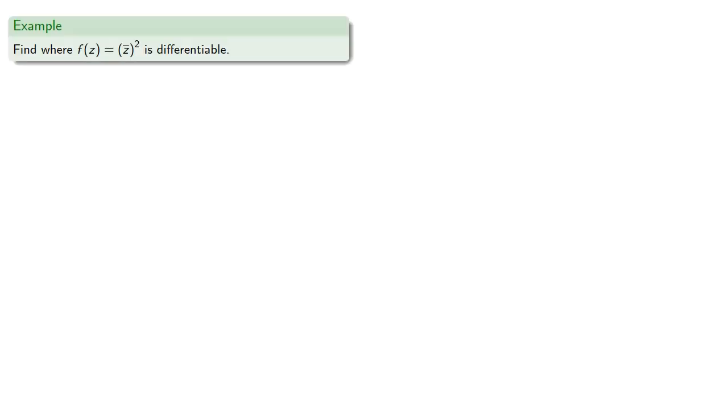For example, let's find where the function, the square of the complex conjugate, is differentiable. Let's rewrite our function in terms of its real and imaginary components. If z is x plus iy, then f of z will be... And we can write our function in terms of its real and imaginary components.